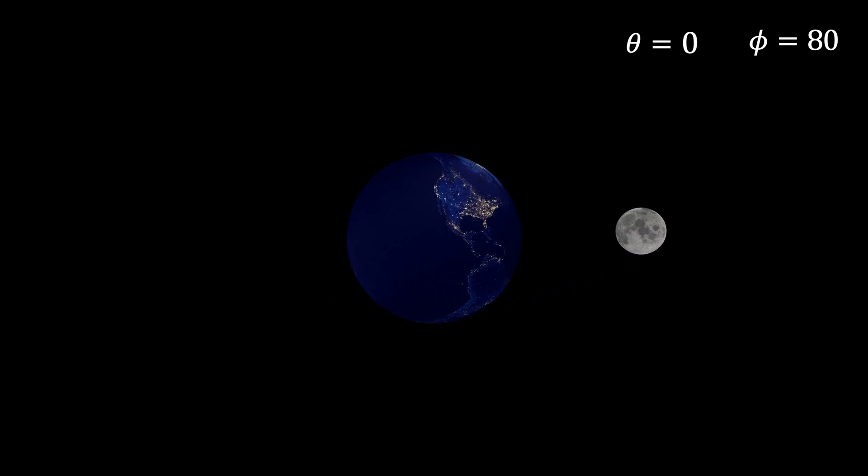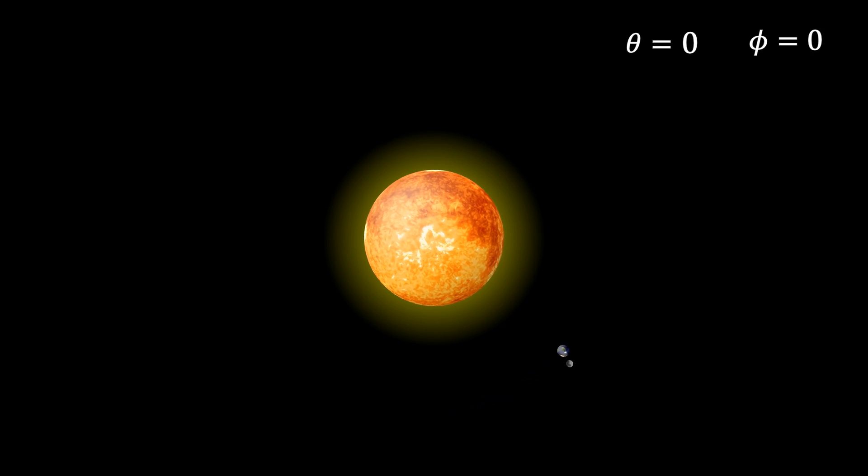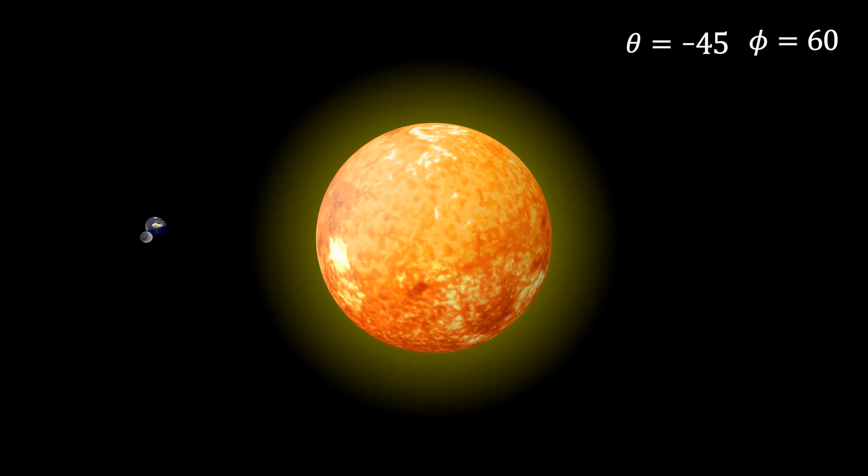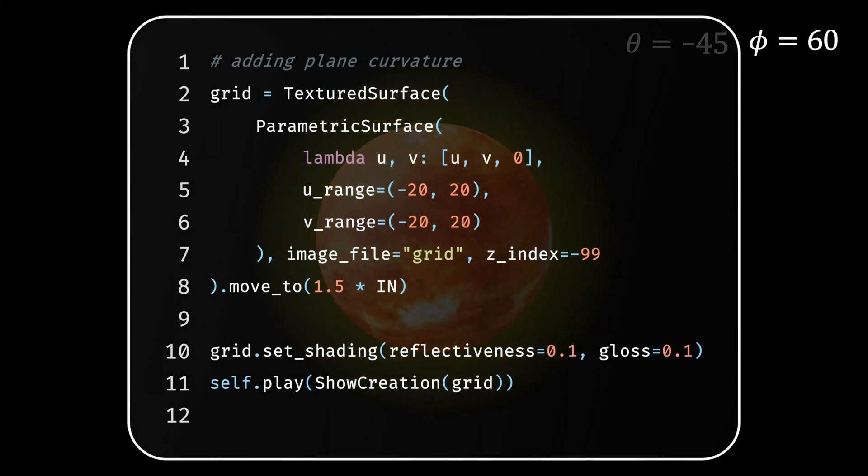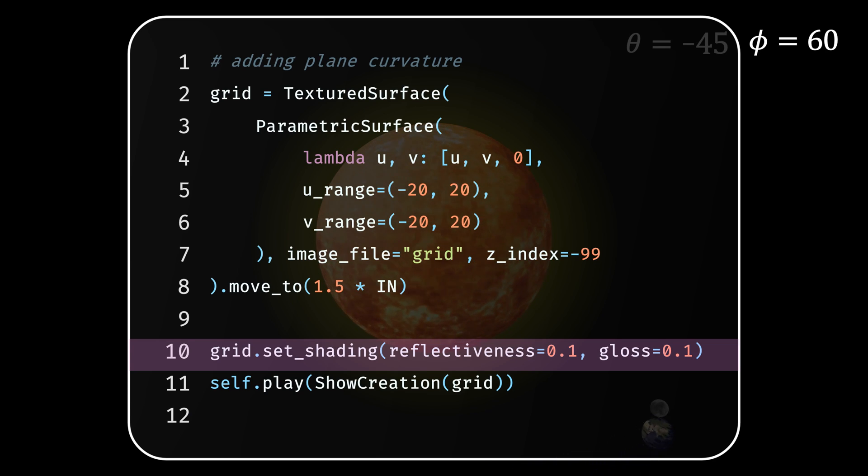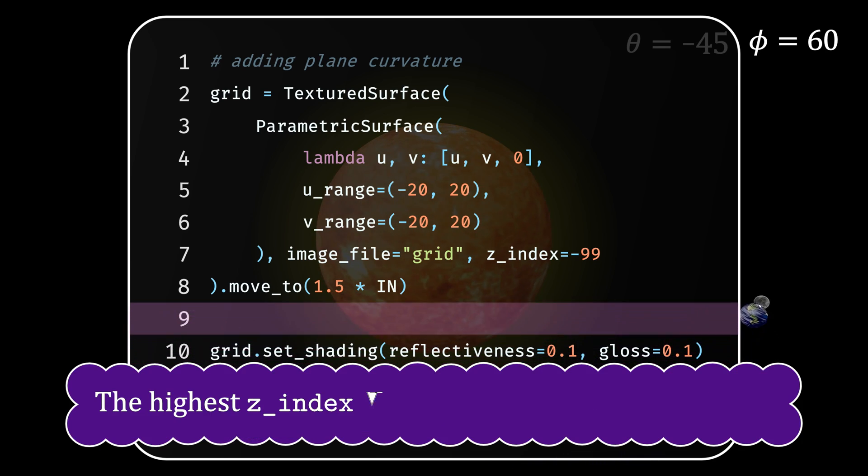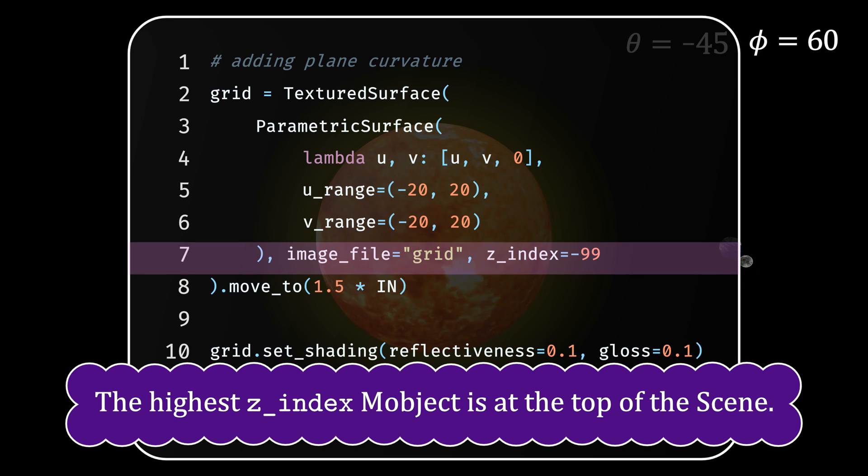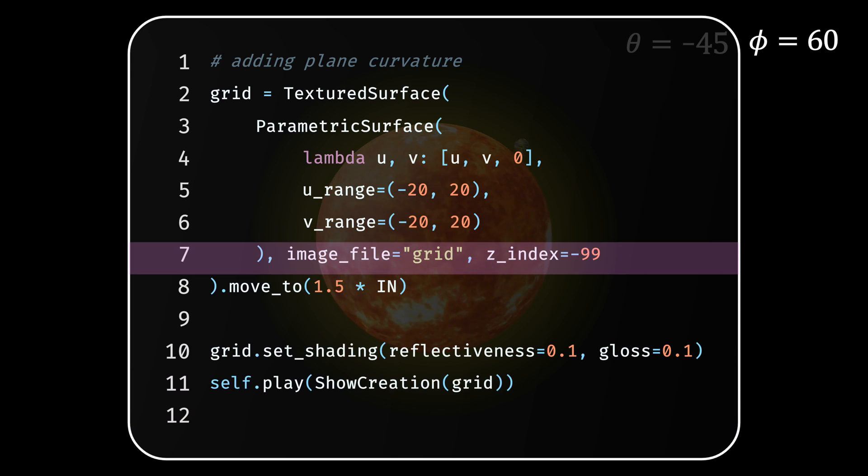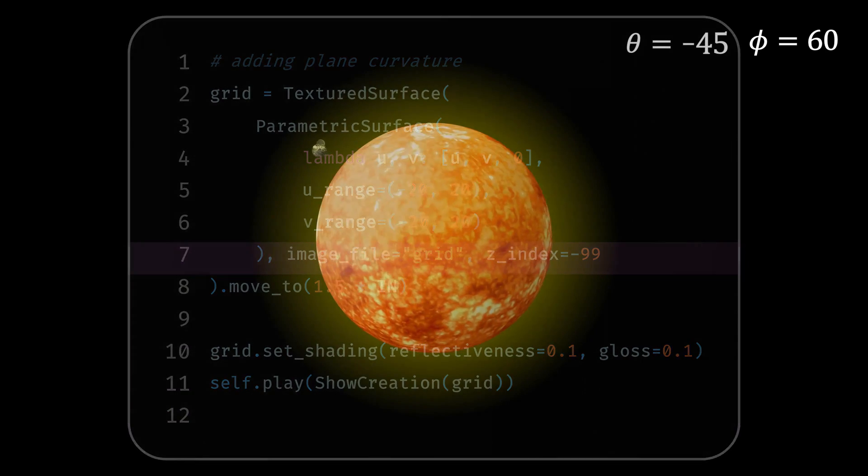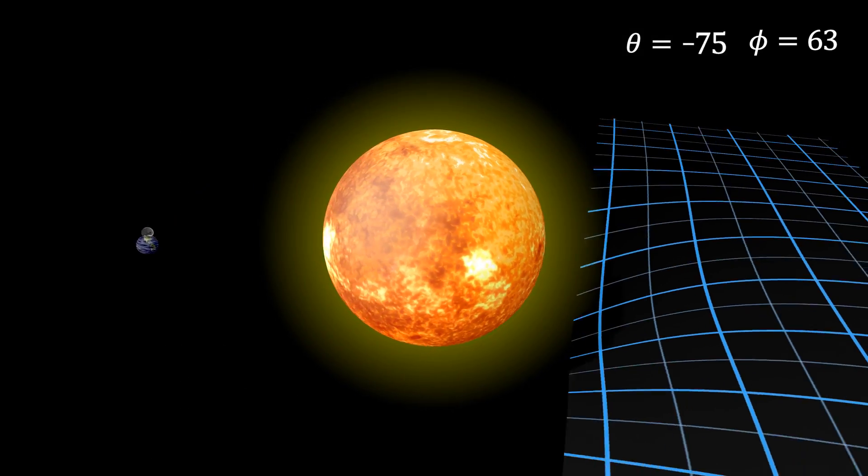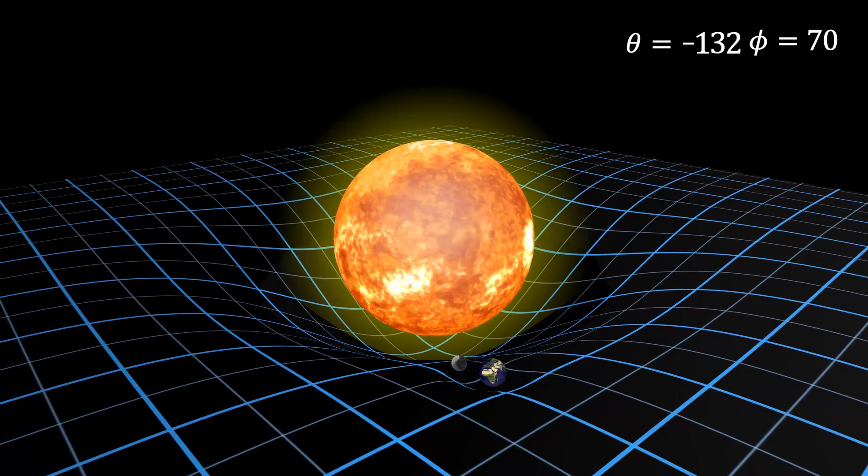Now, finally, to visualize the curvature of space-time, I'll need a plane or a grid which resembles to a space. To show the grid, I'm using the square sheet that we made earlier in the video and setting the gloss and reflectiveness to 0.1. The role of z-index here is to bring the grid at the back of the scene. Every Manim object has this z-index parameter. The role of this z-index in every Manim object is that Manim renders these objects, these Manim objects in the increasing order of the z-indices.